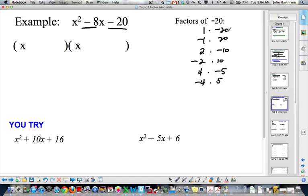Well, 1 plus negative 20 is negative 19. Negative 1 plus 20 is 19. 2 plus negative 10. Oh, right there. 2 plus negative 10 is negative 8. So, I have x plus 2, x minus 10.